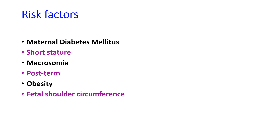The risk factors for shoulder dystocia: the first is maternal diabetes mellitus. In maternal diabetes, the size of the baby is greater — there is a chance for fetal macrosomia. When the baby is larger, the biacromial diameter is also more, making it difficult for the shoulder to pass through the pelvis. Next is short stature: if the mother is less than five feet, her pelvic capacity will be less, and through a narrow pelvis even a normally-sized baby may experience dystocia.